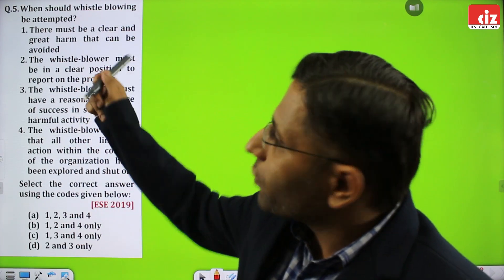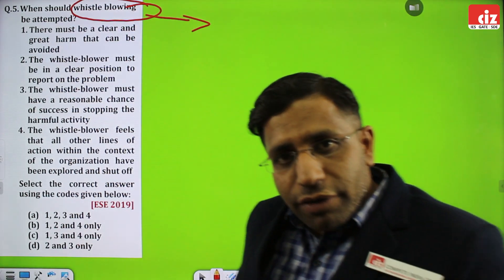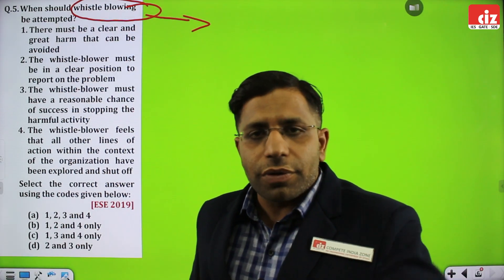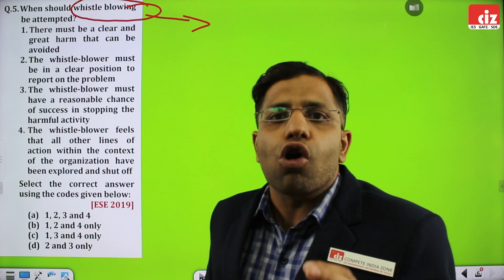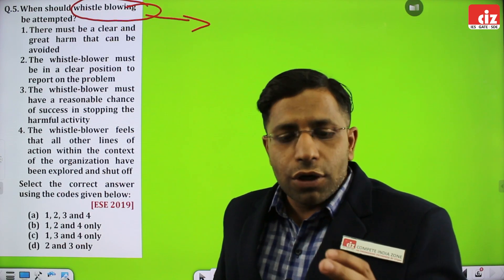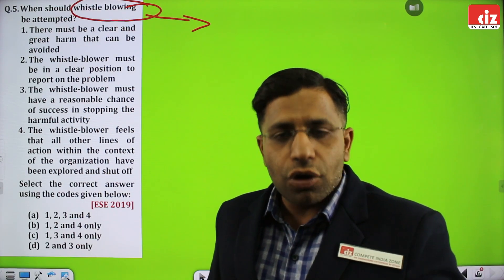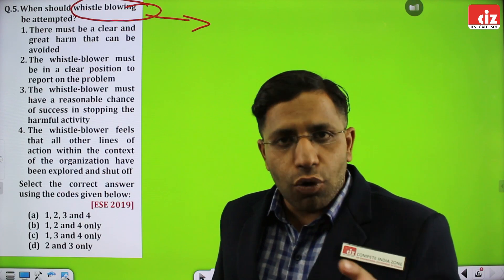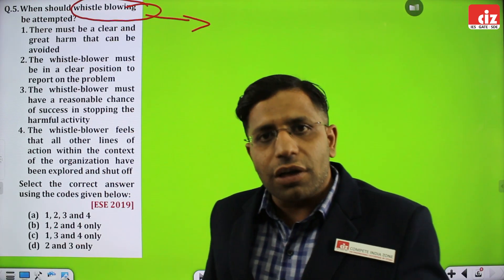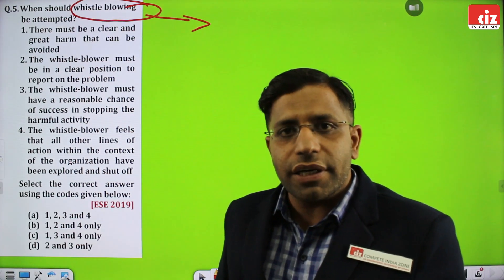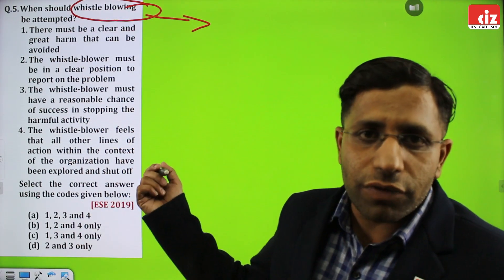The fifth question is about when whistleblowing should be attempted. This is a very important term. Whistleblowing: whenever in any organization — public or private — there is a possibility of any corruption or wrongdoings in the professional job, any person working in that domain who brings those wrongdoings to the forefront, to the administration or to the senior authorities, is called a whistleblower. The action done by that person is called whistleblowing.